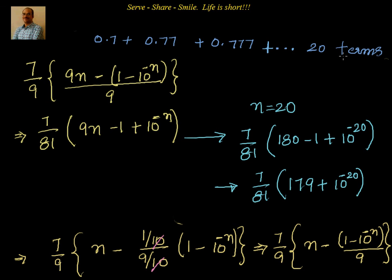So for all problems where digits repeat — like 0.7 + 0.77 + 0.777, or 5 + 55 + 555, or 7 + 77 + 777 — the method is: take the common digit outside, multiply and divide by 9, and rewrite terms as 1 − 1/10^k to extract a geometric progression. This is the standard procedure. We'll do more examples in the coming session — thanks for your time, keep smiling and sharing!